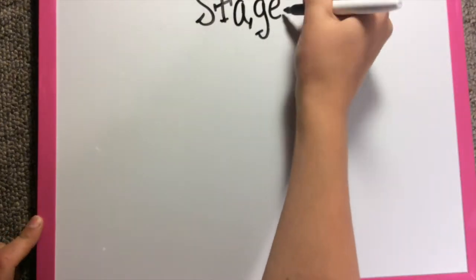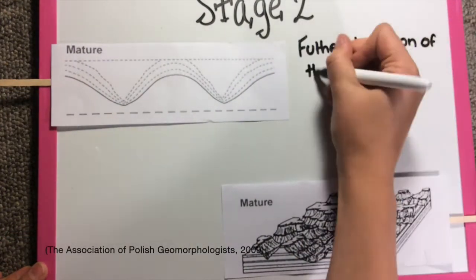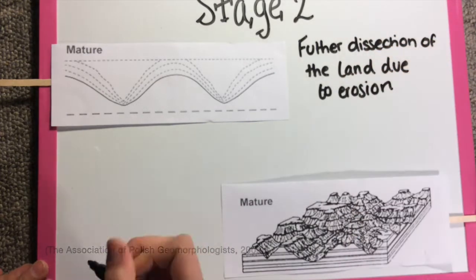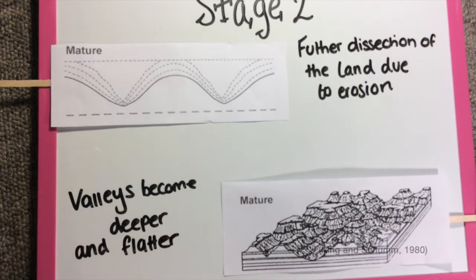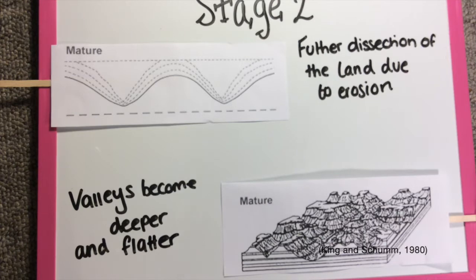Once valleys have been eroded as deep as possible, the landform has entered the maturity stage. Graded streams drain the entire landscape and the original surface is exposed in balloon processes. Valleys flatten and widen as vertical erosion slows and horizontal erosion speeds up.